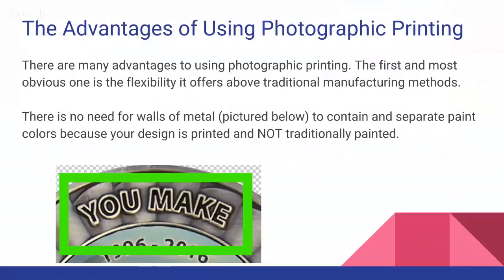The advantages of using photographic printing can be seen in this slide. Inside that green block is the phrase 'you make,' which represents walls of metal — a metal outline that contains and separates the paint colors and composes the characters. When you use photographic printing, the need for walls of metal disappears because it's all being printed instead of stamped or cast.